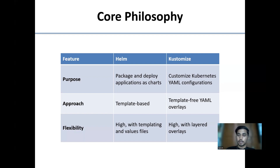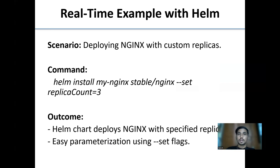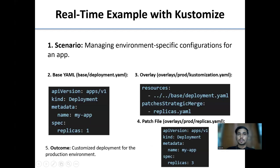Real-time example with Helm — the scenario is deploying Nginx with custom replicas. You can see the command to deploy Nginx with custom replicas set to three. Using this command, the outcome is: Helm chart deploys Nginx with the specified replicas, demonstrating easy parameterization using set flags.